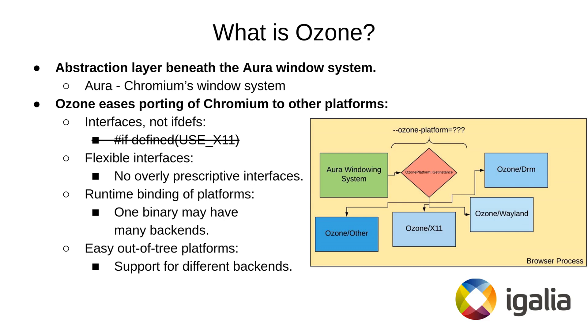With Ozone, one can plug in their own backend — for example, GTK, Qt, or whatever they want — and use that without any major problems when rebasing to a newer version.